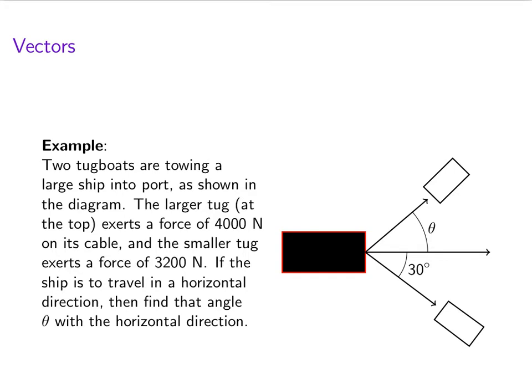That top tugboat exerts a force of 4,000 newtons that it's pulling. The tugboat at the bottom is exerting a force of 3,200 newtons. And the angle that the bottom tugboat is pulling on is 30 degrees. The top one we don't know.